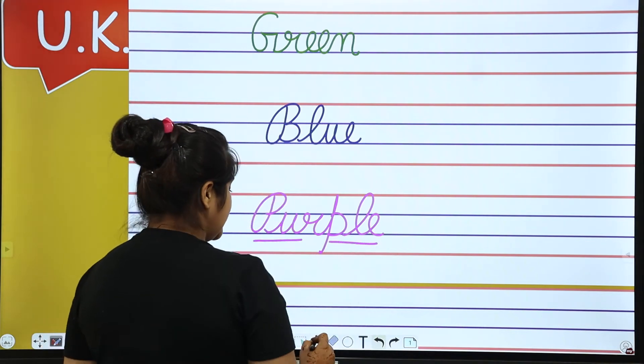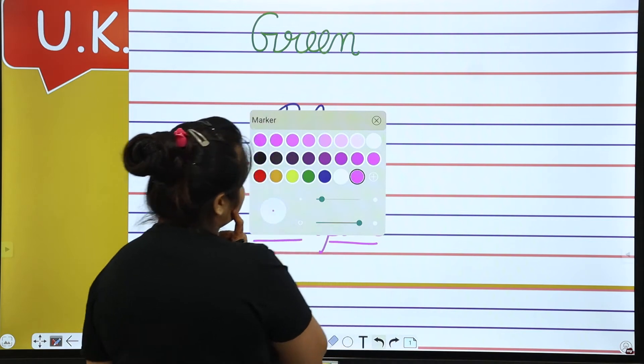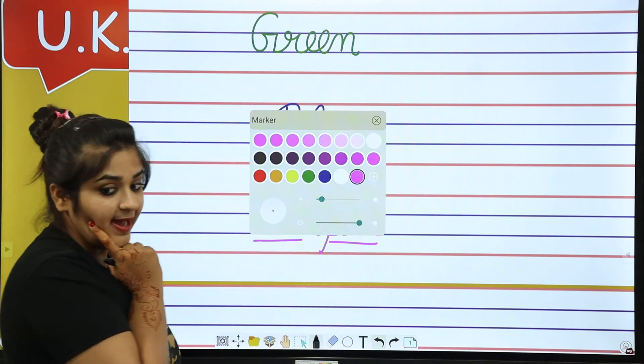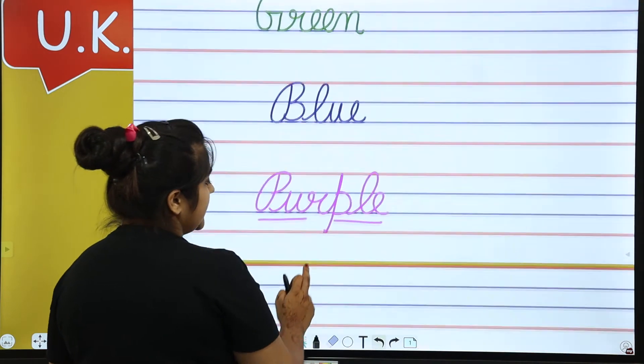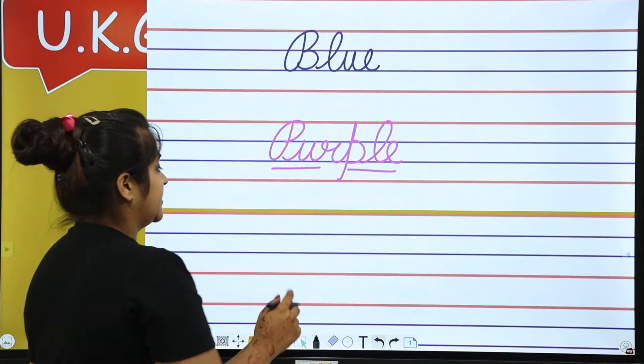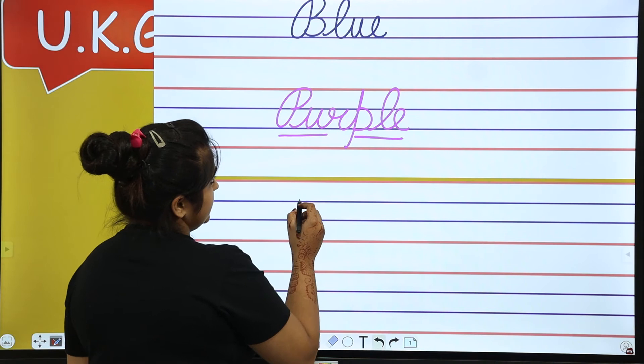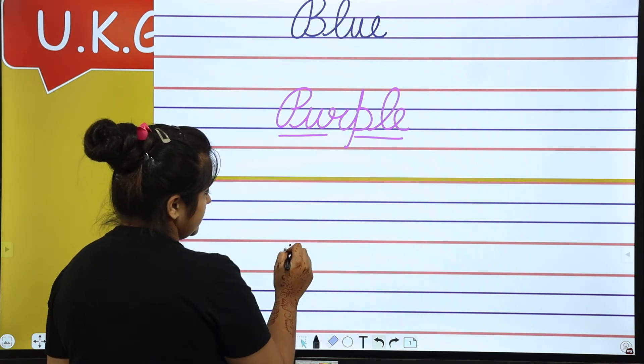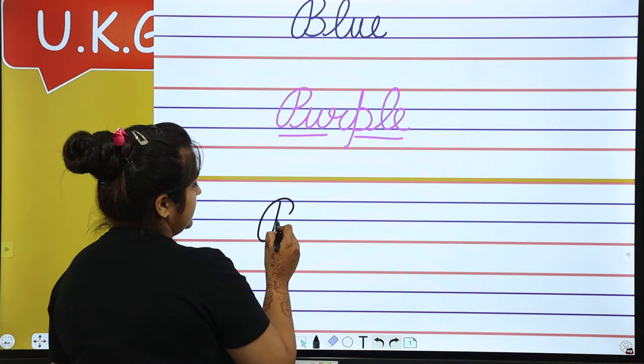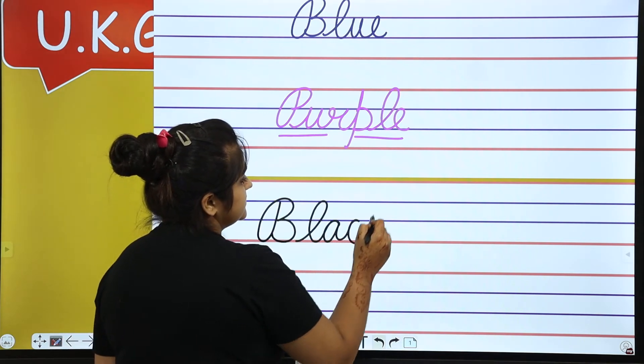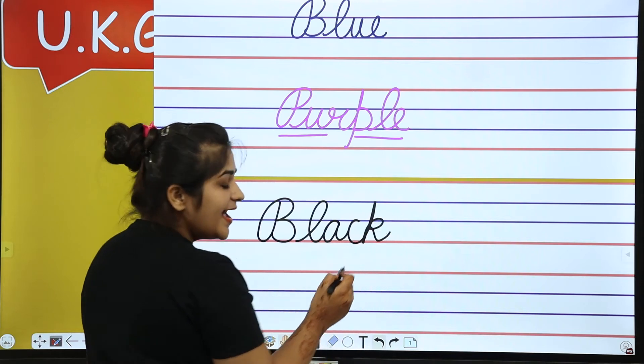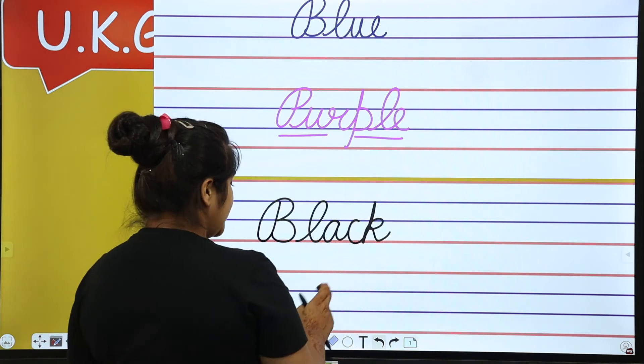And next color is black. Okay, so next color is our black. And the spelling of black is B-L-A-C-K, black. Okay, done.